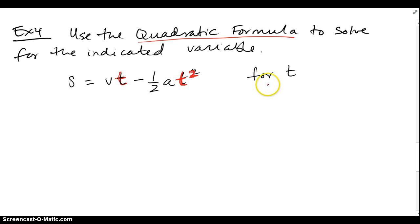All those other things that look like variables are really just numbers. So when I'm done, I should have t equals garbage, garbage being all the other variables on the other side, and t all by itself on one side.